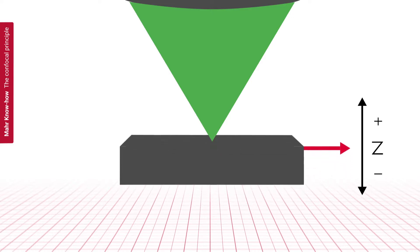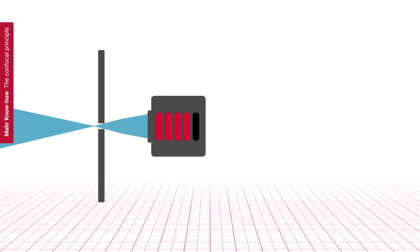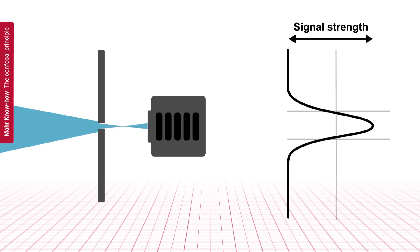During the measurement, the sample surface is moved through the different focal planes of the confocal system. If the sample moves out of focus, the beams are blocked by the detector aperture.